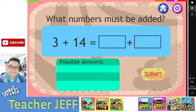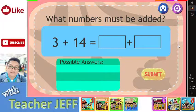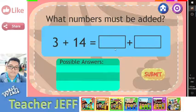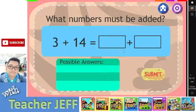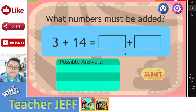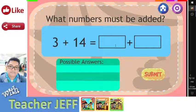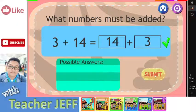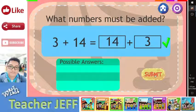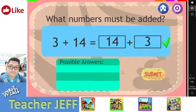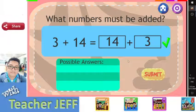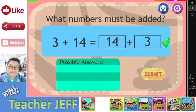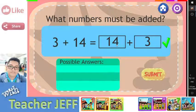Find 3 pairs of add-ins in the following number sentence. Type the missing add-ins in the boxes. Click on the submit button to find out if your answer is correct. You are right! You know that 3 plus 14 equals 17. There are many pairs of numbers that add up to 17. Try to find them.